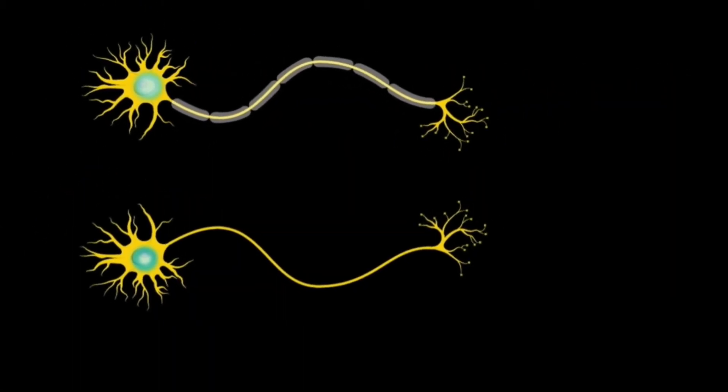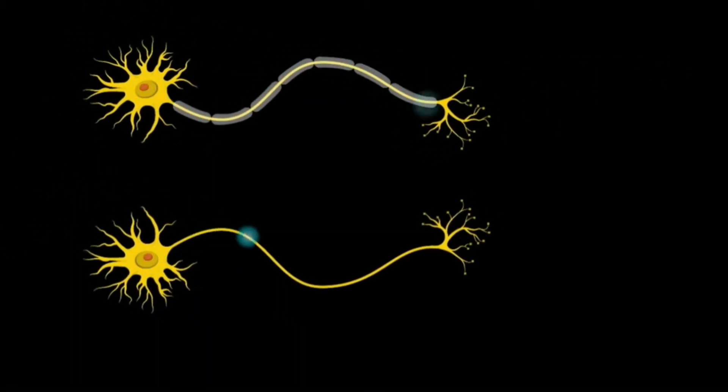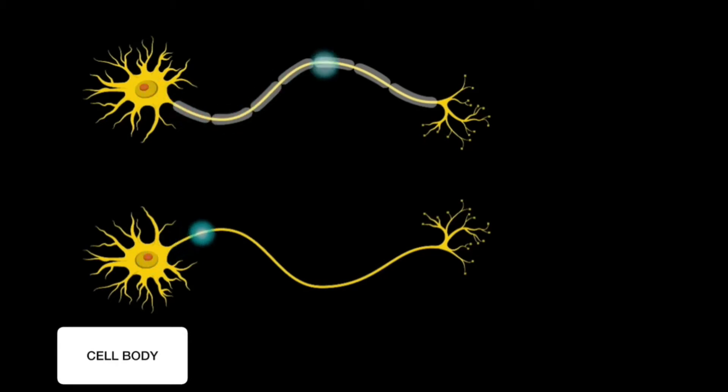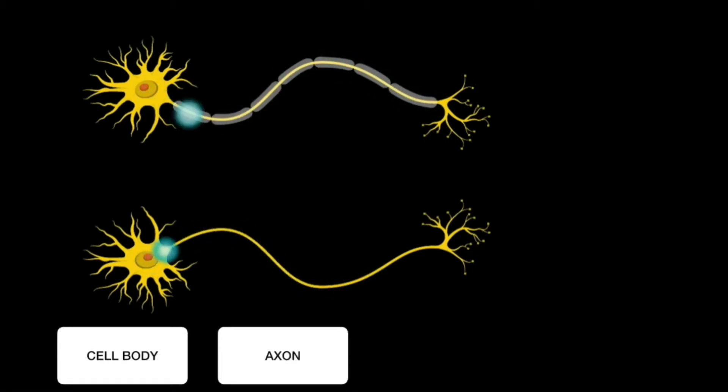Neuron is an excitable cell. It has a cell body from which an axon emerges which conducts impulses away from the cell body and it has dendrites which conduct impulses towards the cell body.